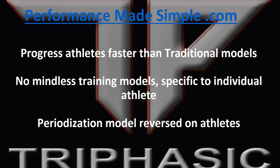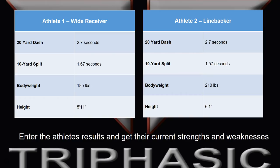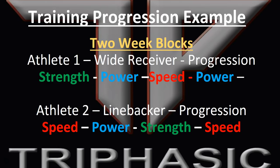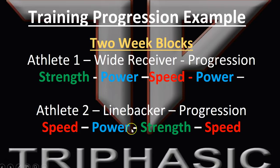Sometimes we have limited time, so we need to progress athletes as fast as possible. Here I have two athletes who ran the same 20-yard dash time, but their 10-yard split is different and their body weight and height are different — a receiver and a linebacker. On two-week blocks, the wide receiver needed to work strength, then power, then speed, then back to power over an eight-week period. The linebacker, being a stronger athlete, needed to work speed, power, and strength — almost a complete reverse in the first six weeks, with speed as the next progression at the end.